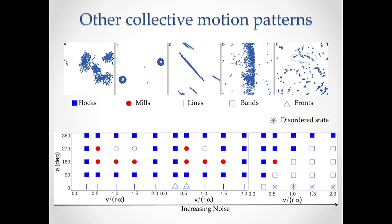We do not observe only milling but also flocks, lines, bands, and fronts. We studied where they happen for which values of the different parameters. For example, we see that lines happen at low noise and low field of view. Increasing the noise, we have first fronts emerging and then bands emerging, while milling has almost disappeared. And increasing the noise further, at certain points the disorder state will invade the entire space.